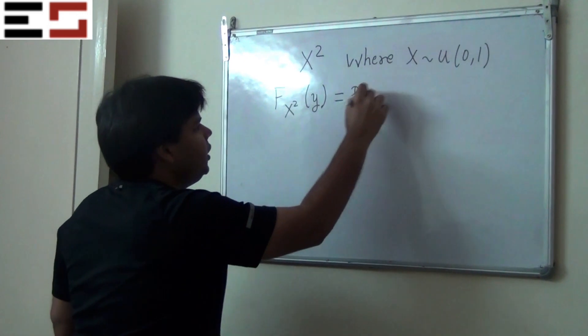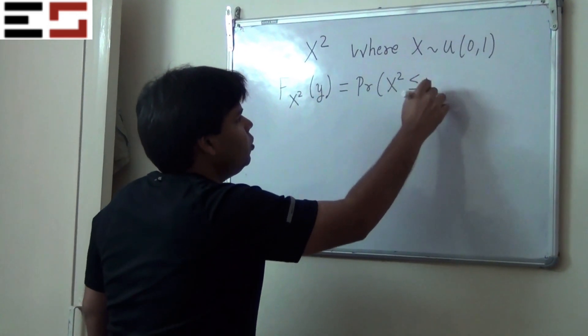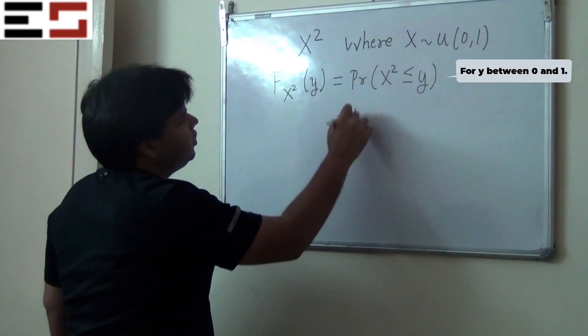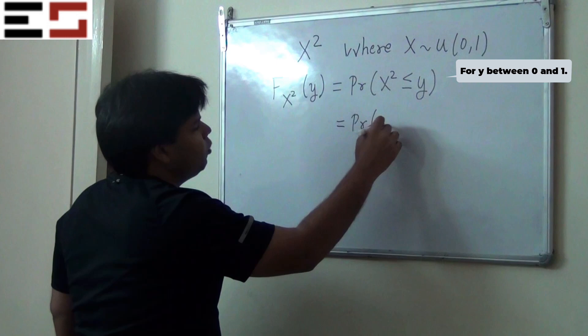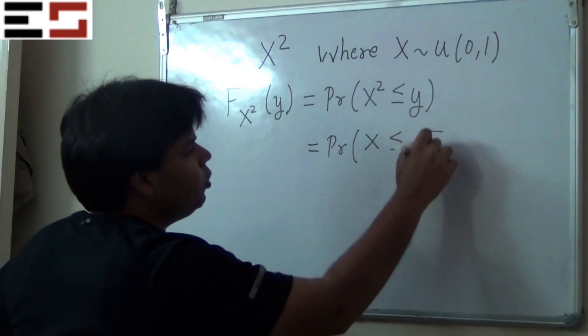It is probability that x squared is less than or equal to y. So this event x squared less than or equal to y can be rewritten as probability that x is less than or equal to root y.